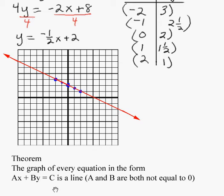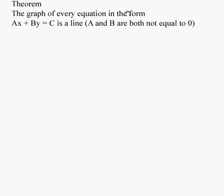Which brings us to a theorem. That says the graph of every equation in the form Ax + By = C is a straight line. Important thing here is both A and B cannot be 0. One of them can. A can be 0 as long as B is not, or B can be 0 as long as A is not. But not both of them are 0.